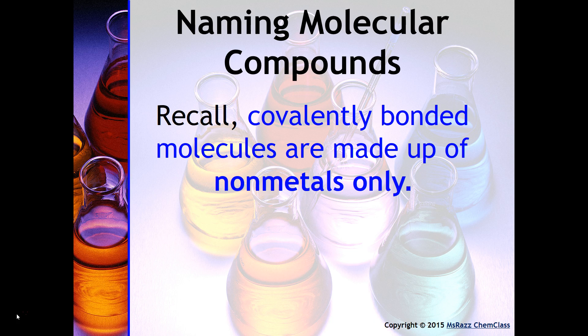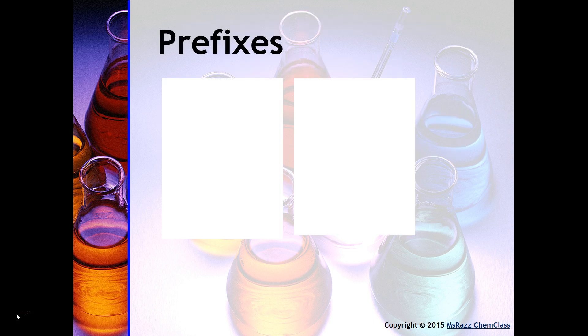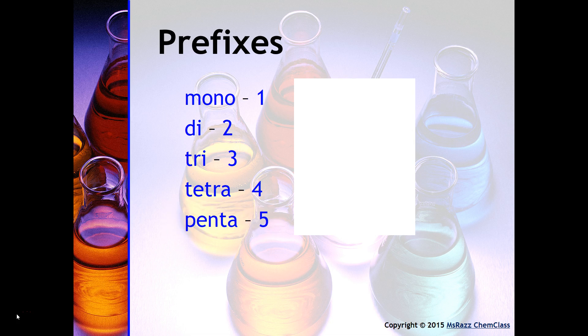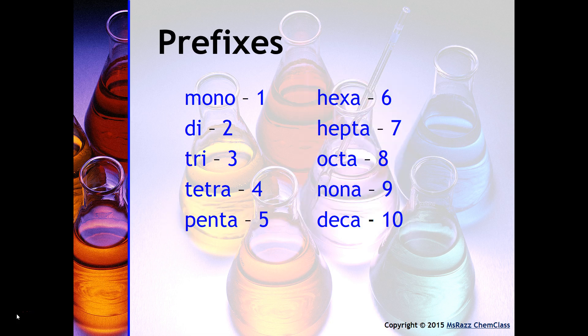Here are the different prefixes that you will need in order to name these compounds. A lot of these prefixes probably look familiar to you: mono means one, di means two, tri is three, tetra is four, penta is five.